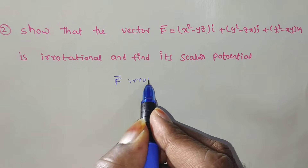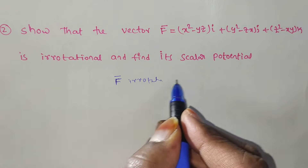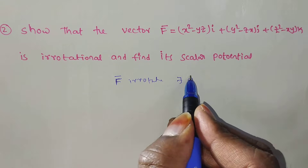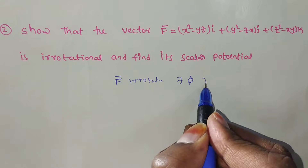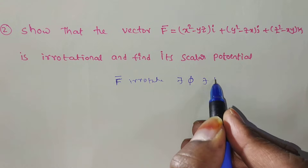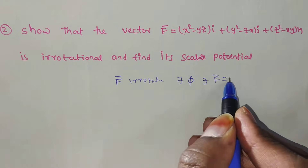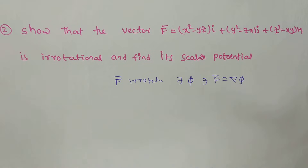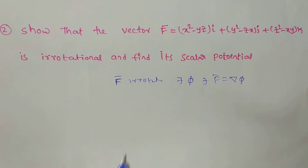if f̄ is an irrotational vector, there exists a scalar potential function π such that f̄ = ∇π. This is the definition for the scalar potential function.